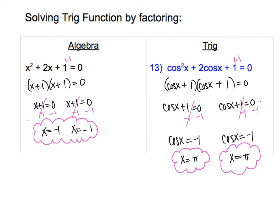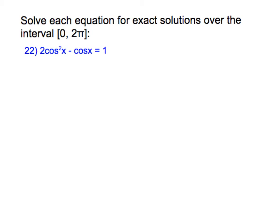I'll do two more problems from the homework. Here I have an equation and I notice immediately it has a squared term. When I have squares I want to try to factor, or use the quadratic formula. I see a cosine squared, a cosine to the first power, and a constant. Moving the constant to the left side gives the trinomial: 2 cosine theta minus cosine x minus 1 equals 0.